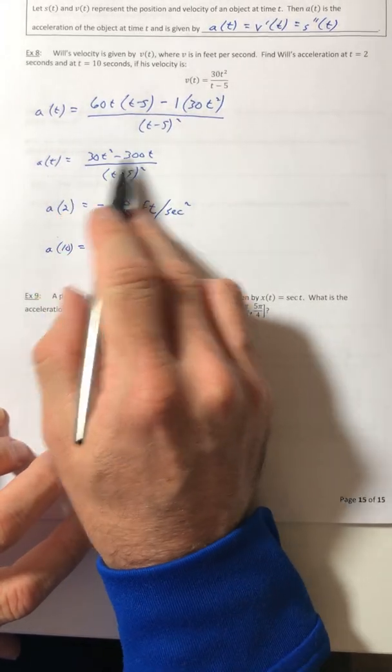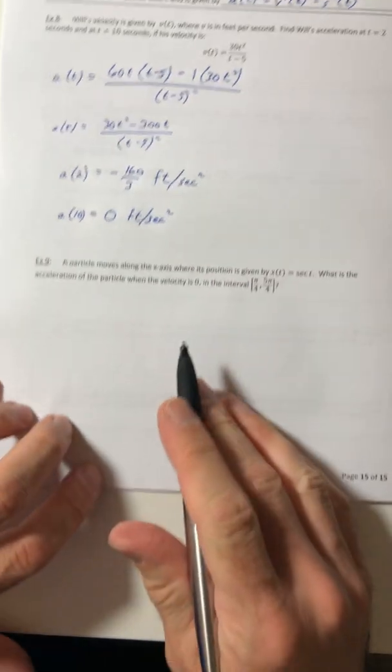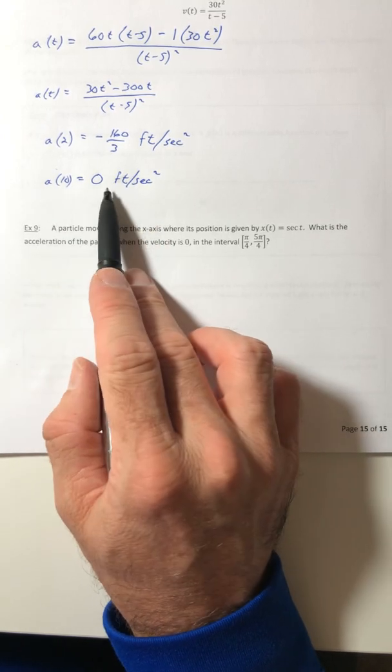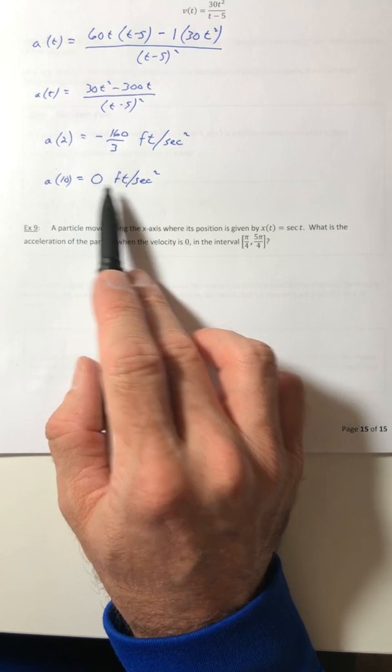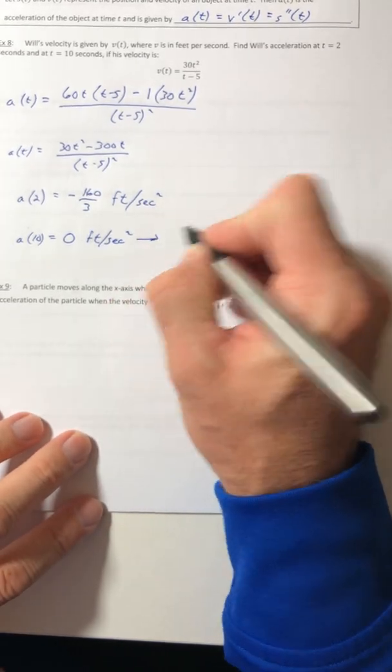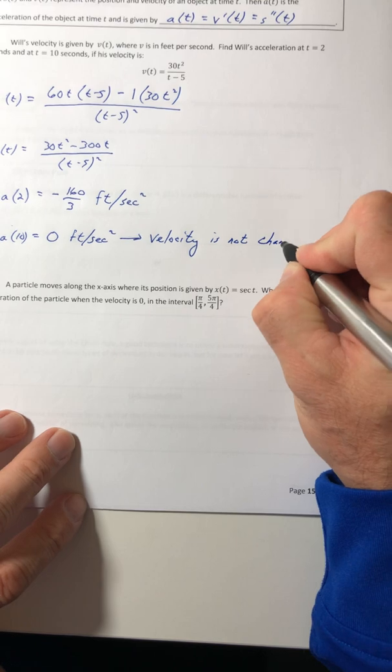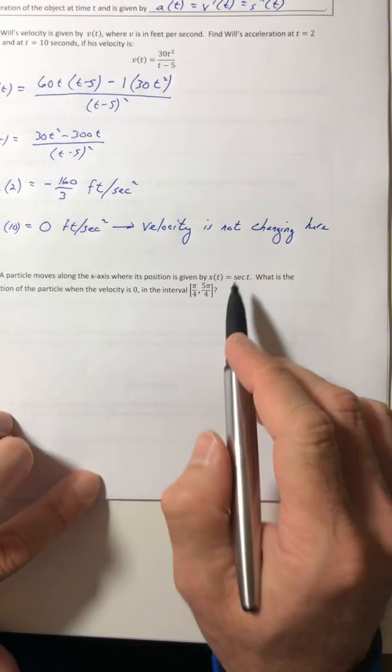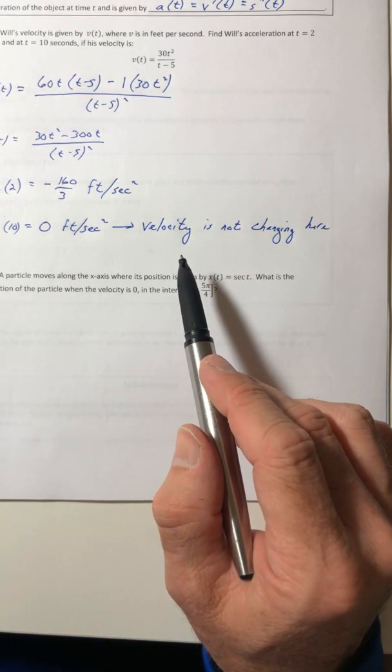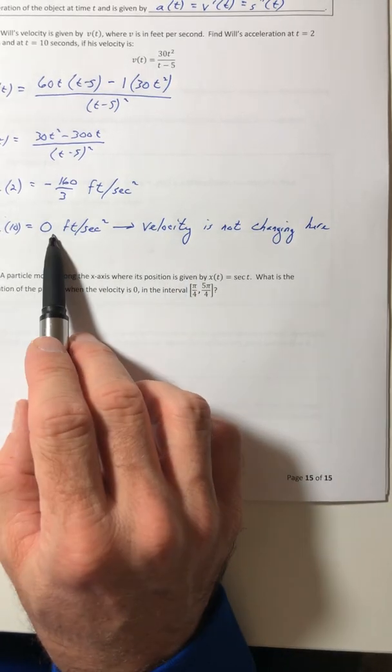Okay, so a of 10 just plug in the 10 for t. Simplify it down and this one comes out as 0 feet per second squared. So this is a little interesting. Whenever your acceleration is 0, physics loves to use problems like this where the acceleration is equal to 0. Because if it's equal to 0, that's telling you something about your velocity function. It's telling you that velocity is not changing at that time unit.